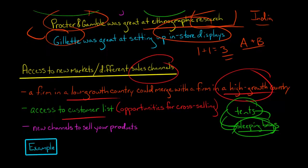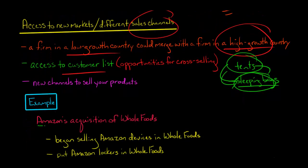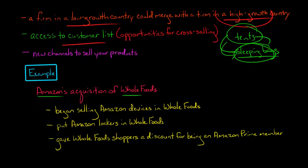Are there other additional new channels and new ways to sell your products? I'll give you a real life example with Amazon when they acquired the grocery chain, Whole Foods. Some things that you saw was Amazon began selling some of their devices like Kindles in the Whole Foods stores. So now Amazon had a new way to actually sell their devices in person instead of just on their website.